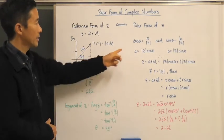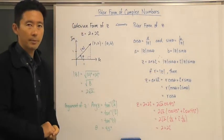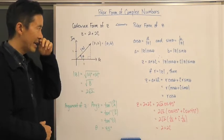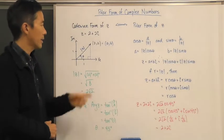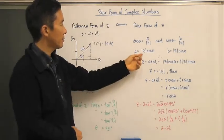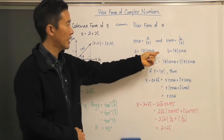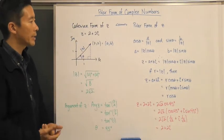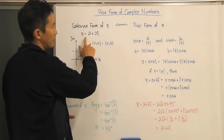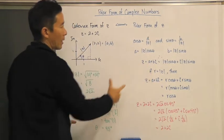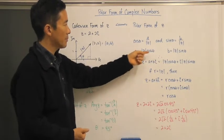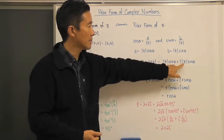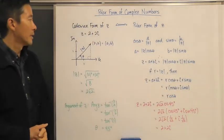We can use trigonometry to say that the cosine of theta is equal to A over the modulus of Z, and the sine of theta is equal to B divided by the modulus of Z. That means A is equal to the modulus of Z times cosine of theta, and B is equal to the modulus of Z times sine of theta. Being that we have the Cartesian form A plus Bi, we can substitute these values for A and B.